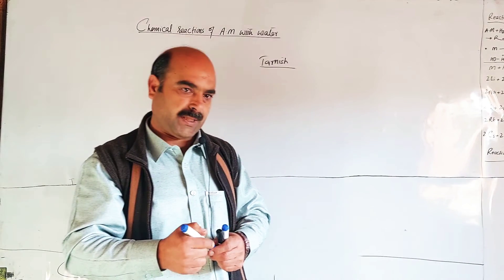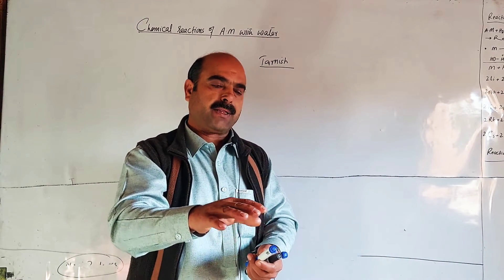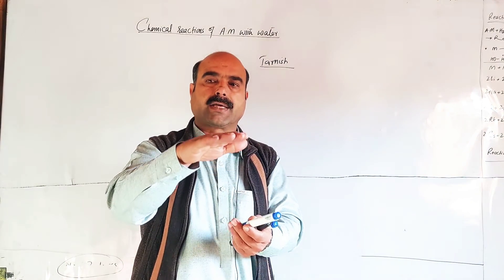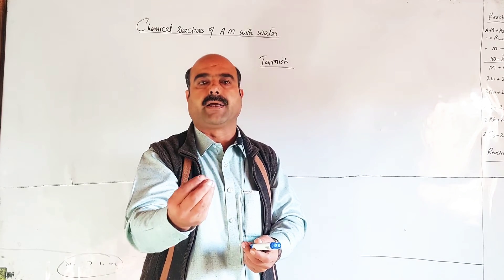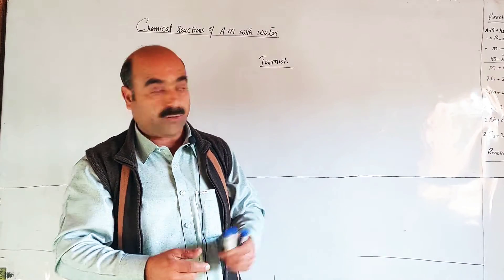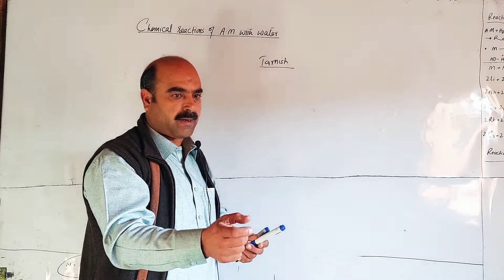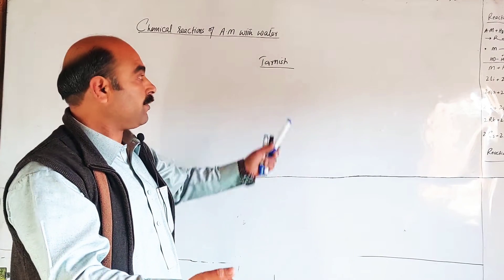When exposed to oxygen, an oxide layer forms on the surface. The bright and shiny color becomes dull. This is called tarnishing.